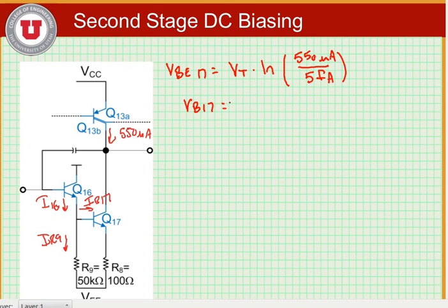VB17 is equal to VBE17 plus the emitter voltage, which is equal to R8 times 550 microamps, which yields 716 millivolts.